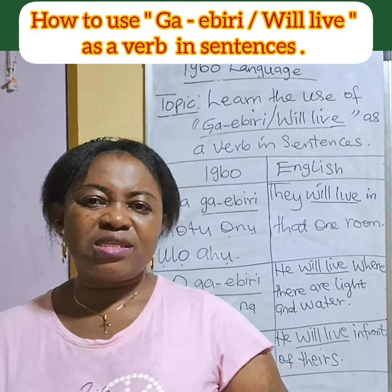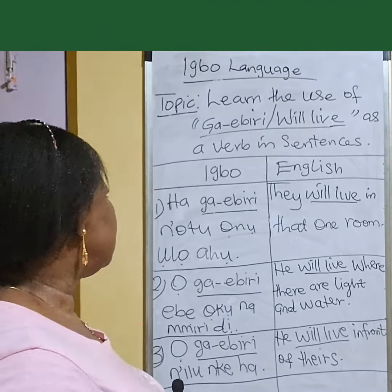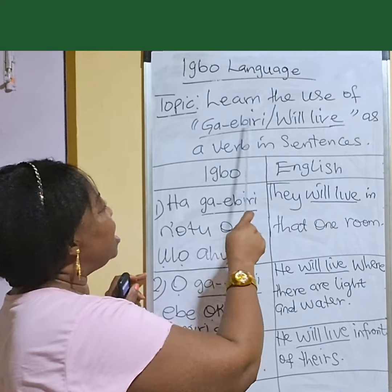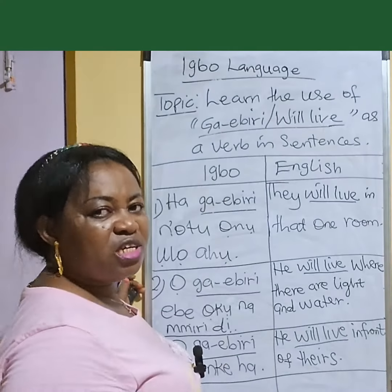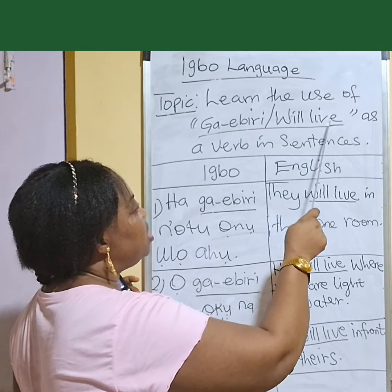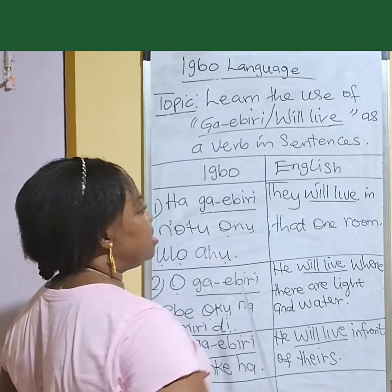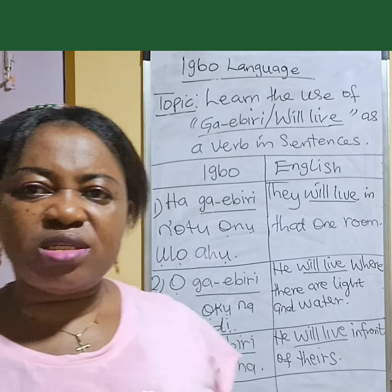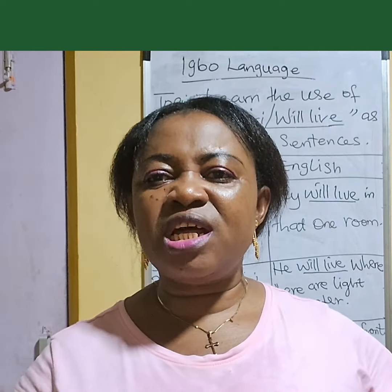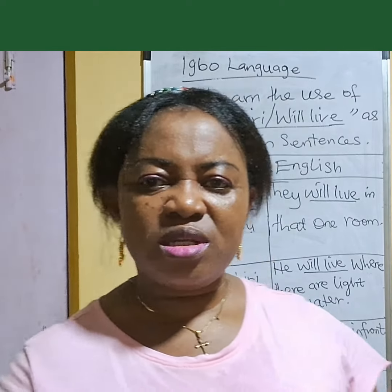Welcome back to my class. We have Igbo language. Our topic says: learn the use of 'ga ebiri.' 'Ga ebiri' in English simply means 'we live' as a verb in sentences. When you hear 'ga' in Igbo language, ga indicates future tense. Ga is an auxiliary verb that indicates future tense. Let us start.